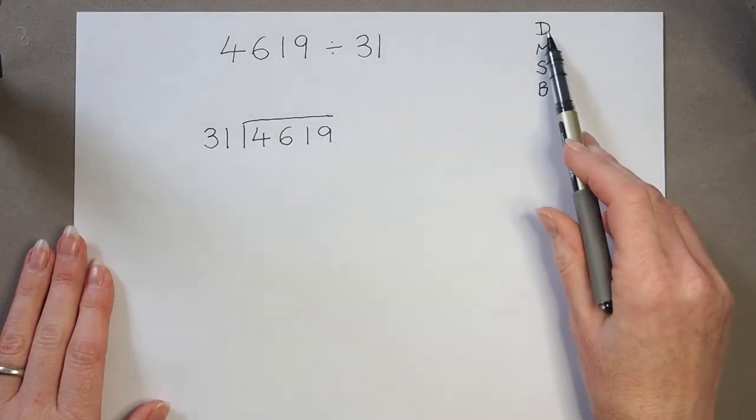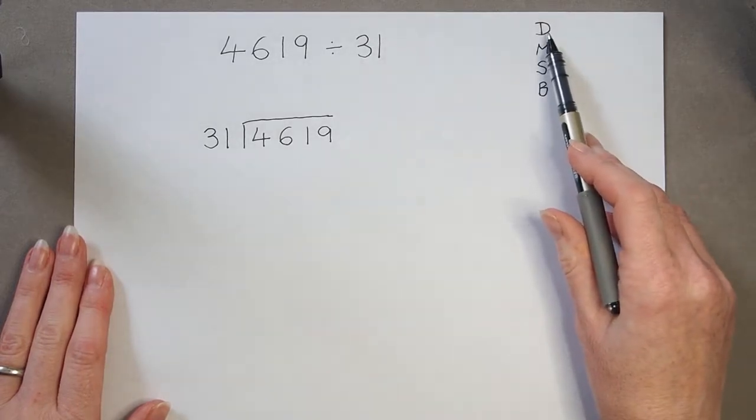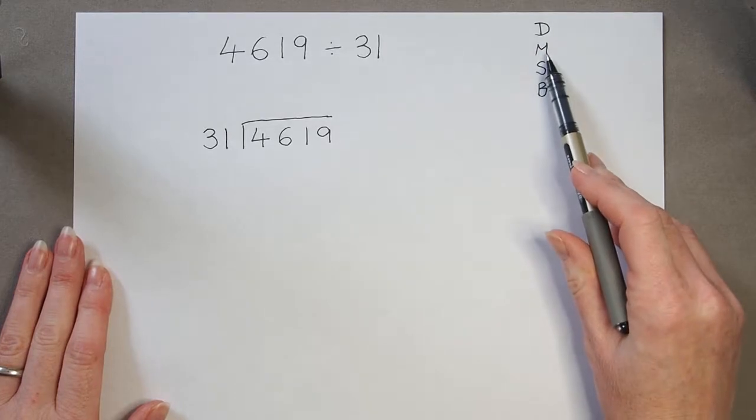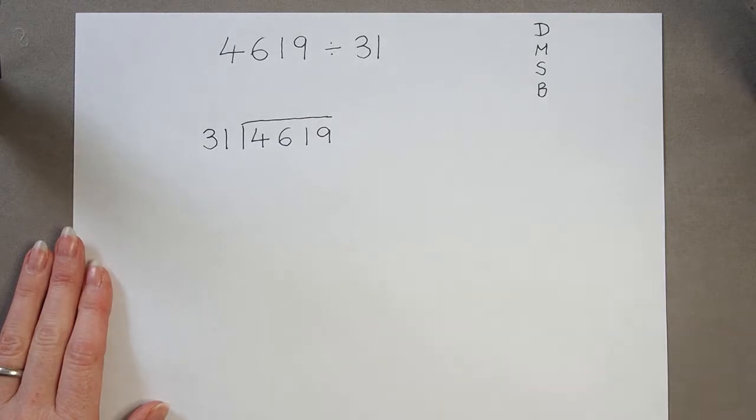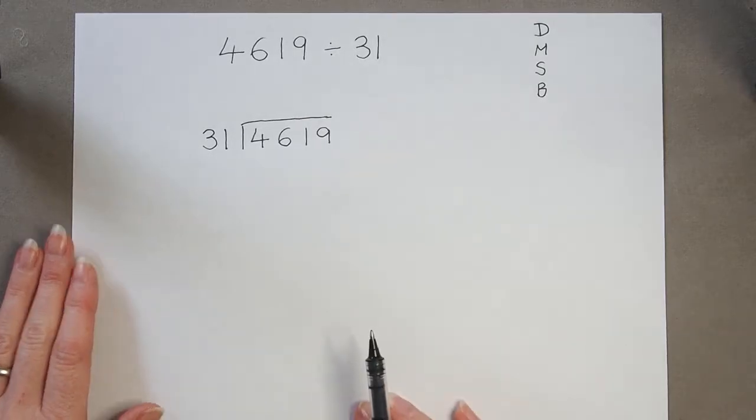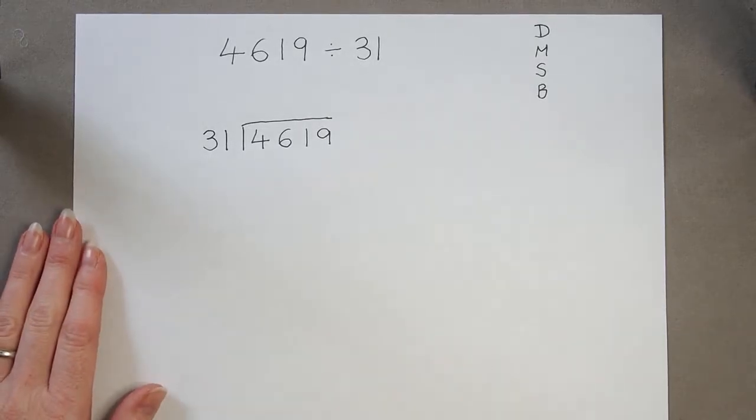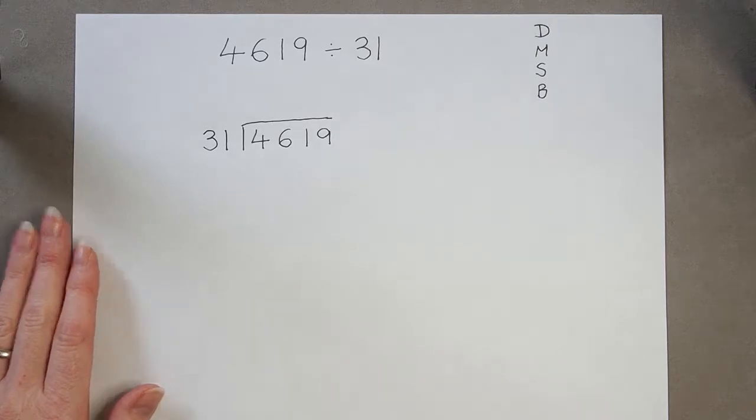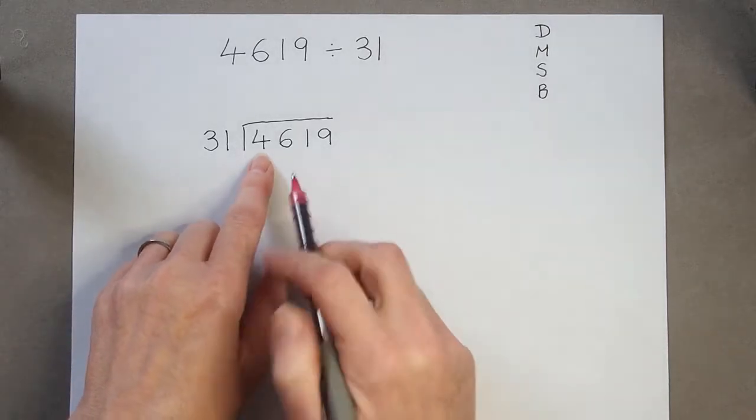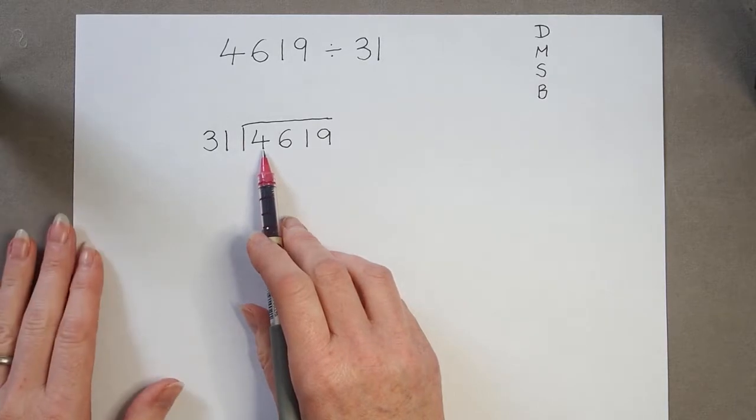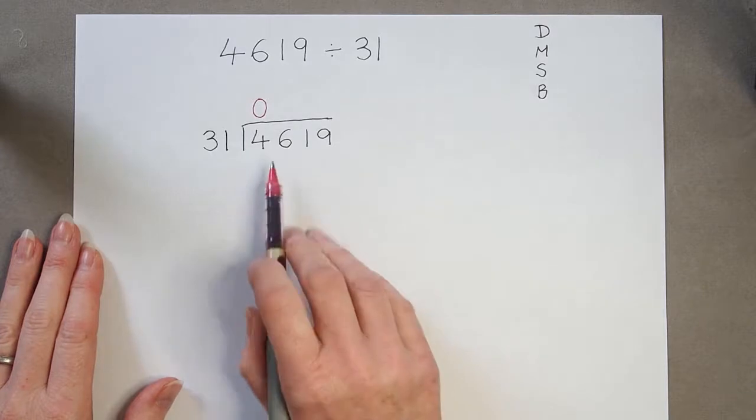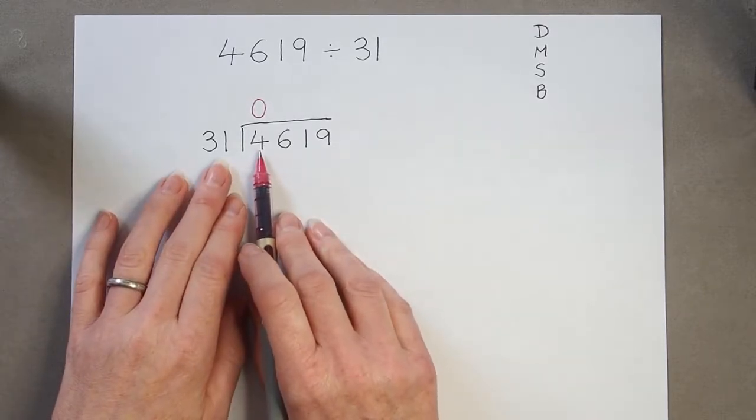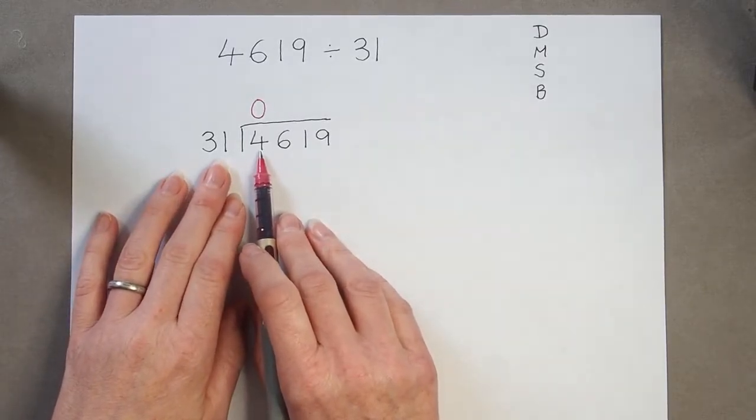That's just going to remind me the order I need to do things. If I get stuck, I should be dividing, then multiplying, subtracting, and bringing down. I keep repeating that till I get to the end of the calculation. To start off, I can see I can't divide 4 by 31, so I'm going to just put that 0 in. 4 can't be divided by 31, it's too small, there would be 0.